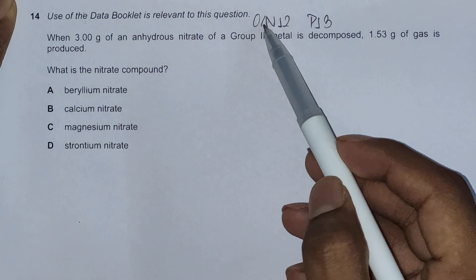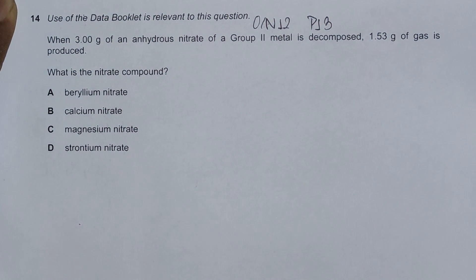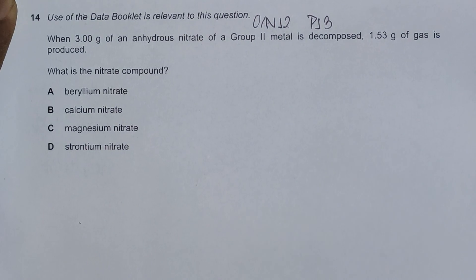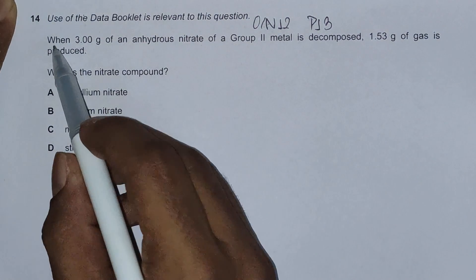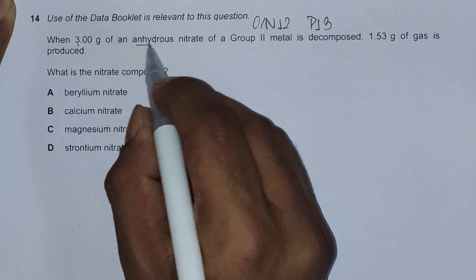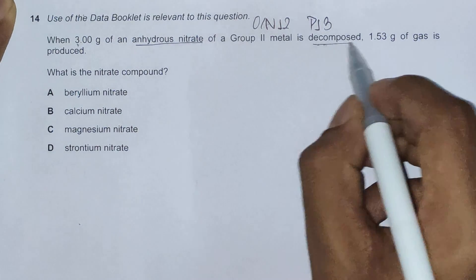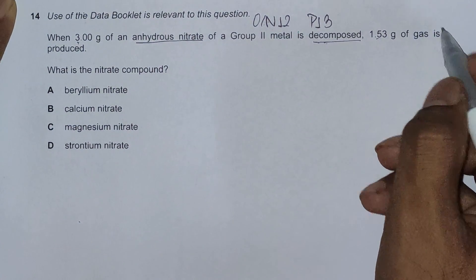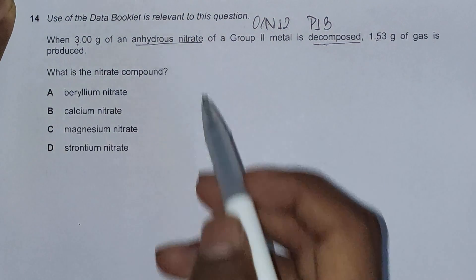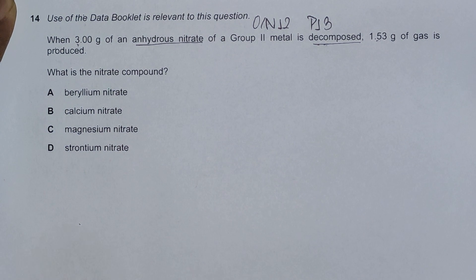Hello everyone, this is a November 12 question paper 1.3, question number 14. It's concerned with the chapter Group 2. The question: when 3 grams of anhydrous nitrate of Group 2 metal is decomposed, 1.53 grams of gas is produced. What is the nitrate compound?